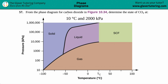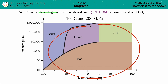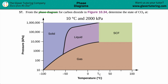Number 57. From the phase diagram for carbon dioxide, which is this phase diagram right here, figure 10.34, determine the state of carbon dioxide at 10 degrees Celsius and 2,000 kilopascals.